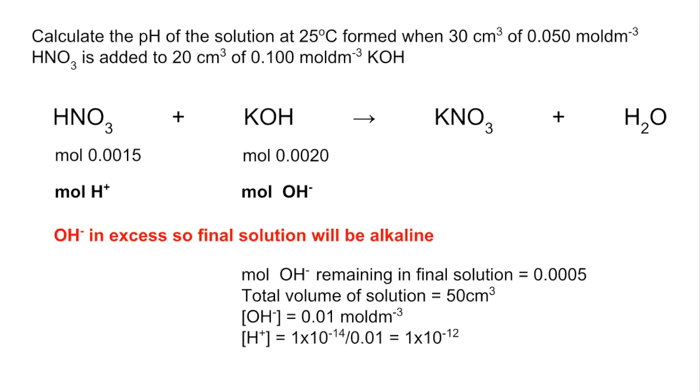So the H plus concentration is going to be the KW at 25 degrees C, divided by the concentration of the hydroxide ions. That gives us 1 times 10 to the minus 12, and then we minus log that, and we get a pH of 12.